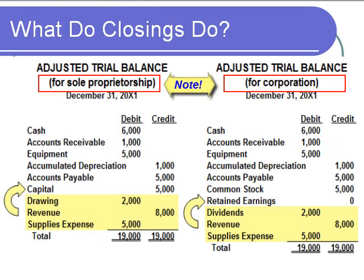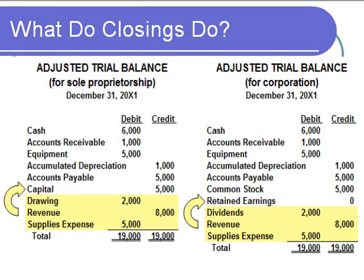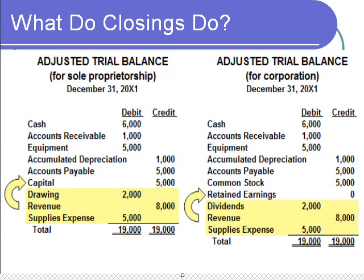We will transfer their balances from the temporary accounts into the real, permanent owner equity accounts where they actually belong. On this slide, we're given a sample adjusted trial balance from which the financial statements were prepared. Now that the statements have been prepared, it will be necessary to close the temporary accounts. Some textbooks utilize sole proprietorship businesses in their examples; others focus on corporations. Our video illustrates the closing entries for both types of businesses. We'll begin by looking at the closings for a sole proprietorship.